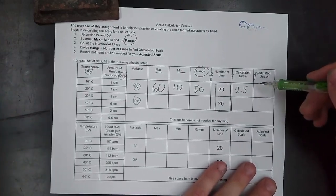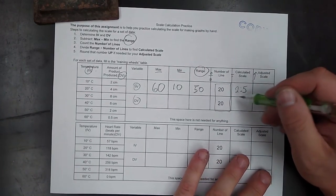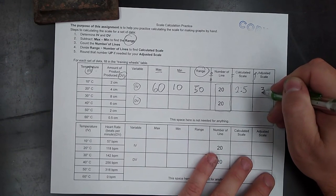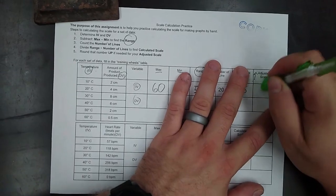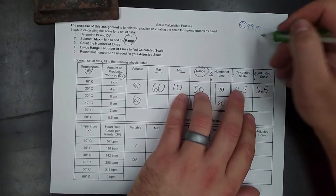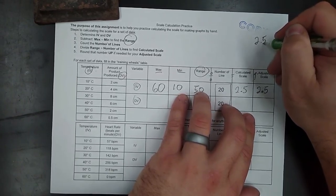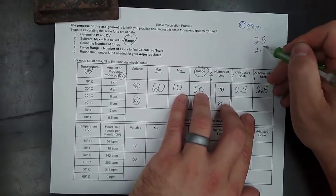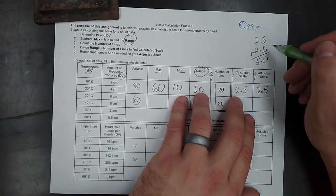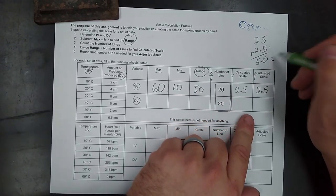Now, for your adjusted scale, you've got some choices. I wouldn't round this all the way up to 5—that's pretty far. You could round it up to 3, or you could just keep it at 2.5, because 2.5 plus another 2.5 is 5. So you know that every other line would just be 5.